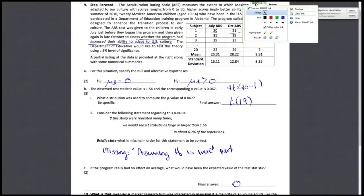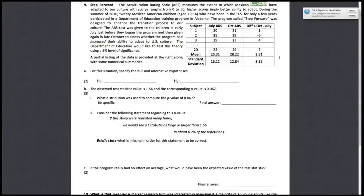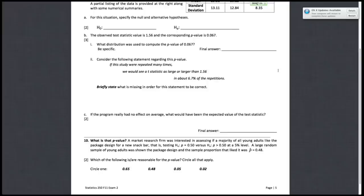All right. So, for the next question, what is the p-value? A market research firm was interested in assessing if a majority of all young adults like the package design for a new snack bar. That is, H0 is p equals 0.5 versus the alternative, which is p is greater than 0.5 at a 5% level. A large random sample was shown the package design, and the sample proportion that liked it was p-hat equals 0.48. And then the question asks, which of the following is reasonable for the p-value?